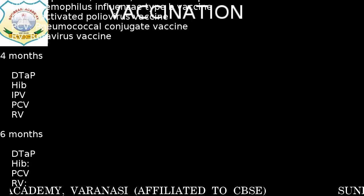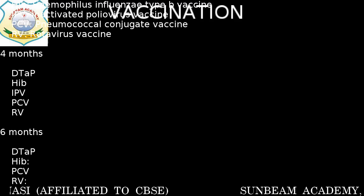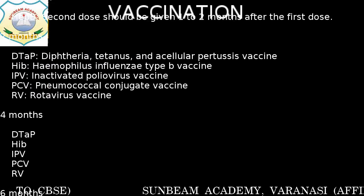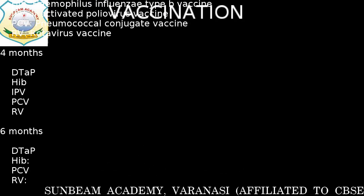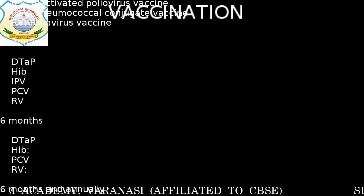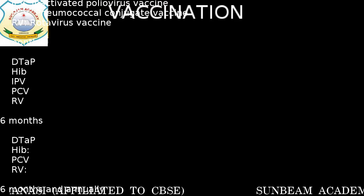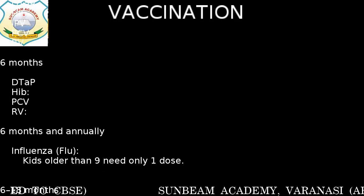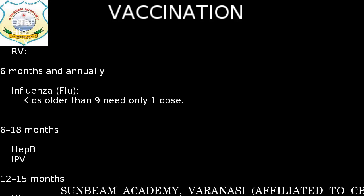When we become 4 months old, again the same vaccines are provided — DTaP, Hib, IPV, PCV, and RV — either injected or taken orally. These are the second or third dose of the same vaccine. At the end of 6 months again, the same vaccines are given. So 3 to 4 doses of these vaccines are administered to us.